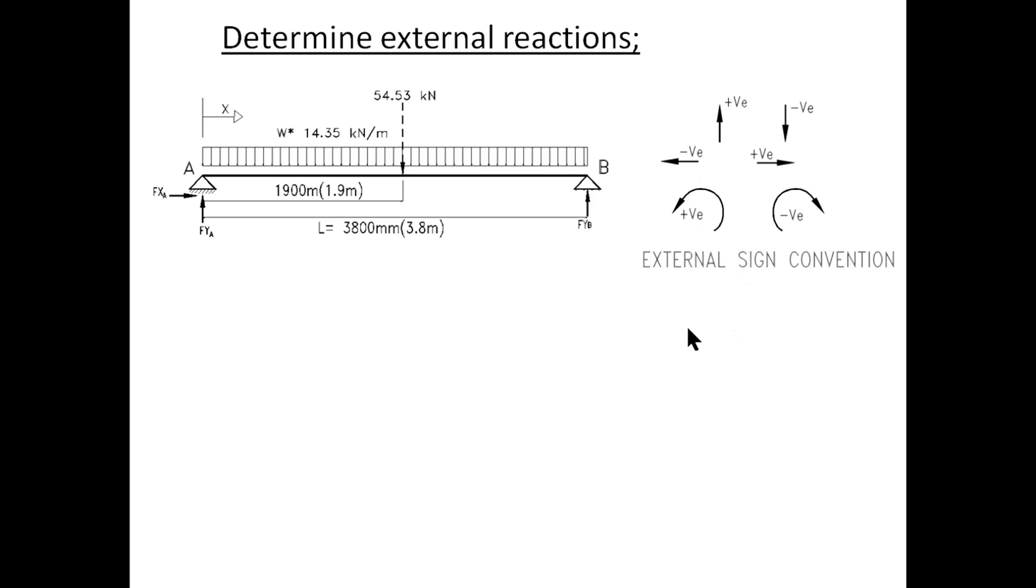Moment anti-clockwise is positive which causes compression at the top of the beam and clockwise as negative. This is a very important step when designing beams. It is a good practice to draw it next to you so that you do not forget it.